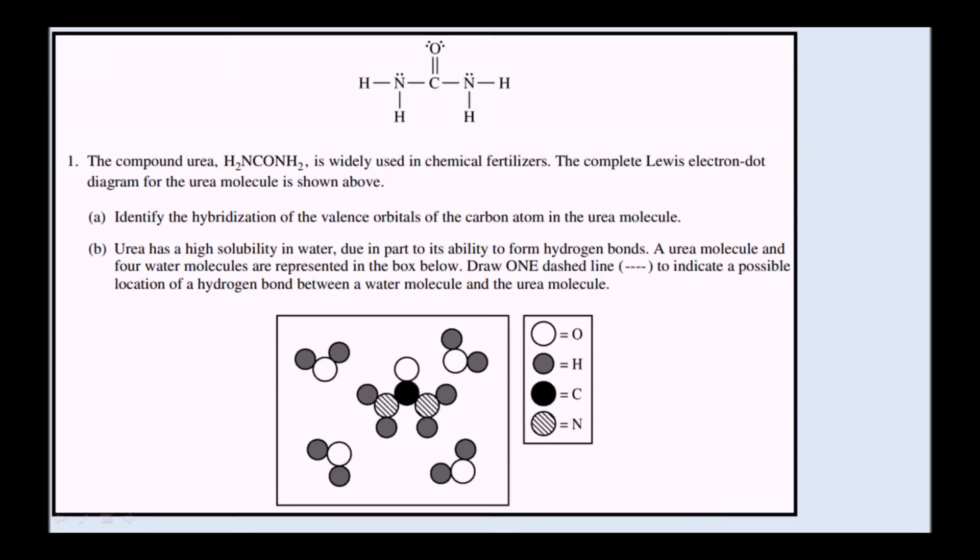The compound urea, H2NCONH2, is widely used in chemical fertilizers. The complete Lewis electron dot diagram for the urea molecule is shown above.